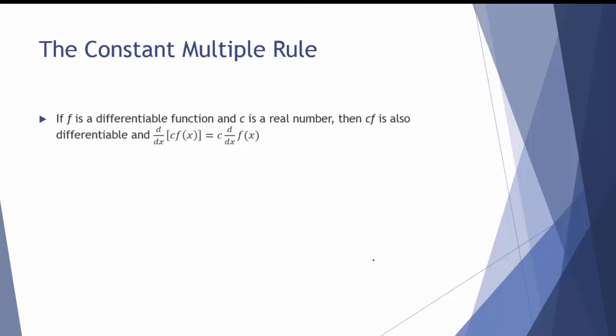The next rule we want to look at is called the constant multiple rule. It says that if f is a differentiable function and c is a real number, then c times f is also differentiable. The way you find the derivative, d/dx of c times f of x, is that you can take the c out of the derivative and then just take the derivative of the function and multiply it times the constant.